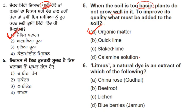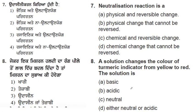The sixth question: Litmus is a natural dye. It is an extract of which of the following — China rose, beetroot (chukandar), lichen, or blueberry (jamun)? Litmus is extracted from lichen.